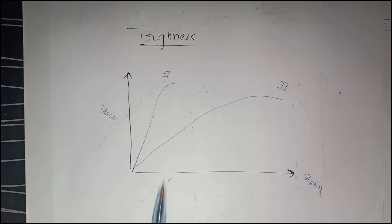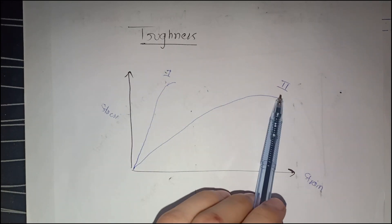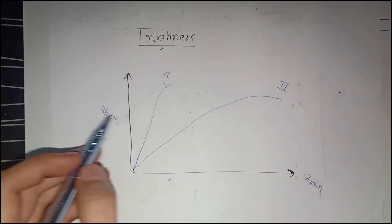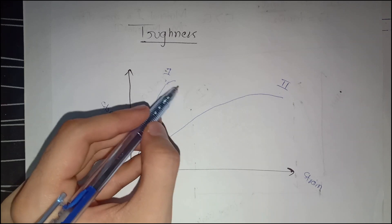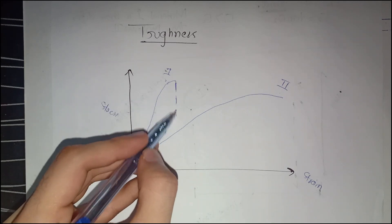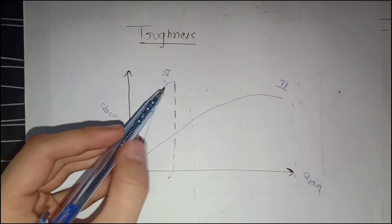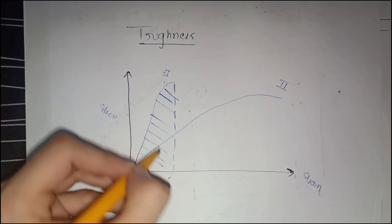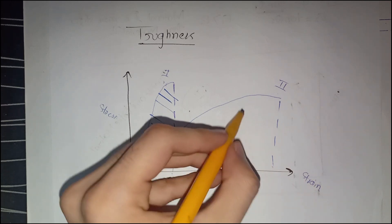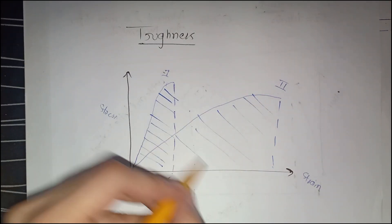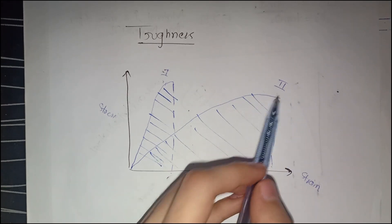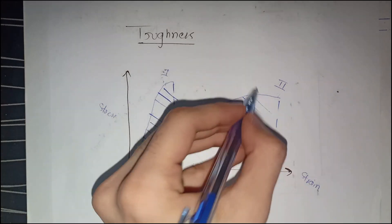For toughness, we compare stress-strain curves of two materials. Toughness is the ability of the material to resist energy load up to fracture. From the stress-strain diagram, you can get an idea of toughness by looking at the area under the curve. The larger the area, the tougher the material — so material 2 is tougher compared to material 1.